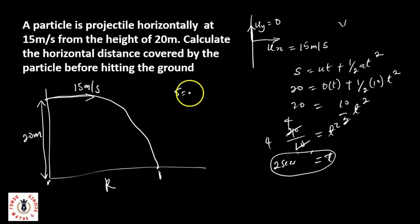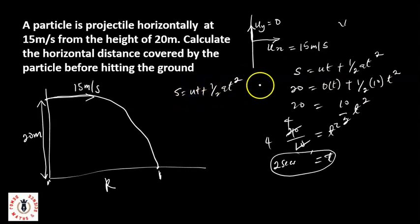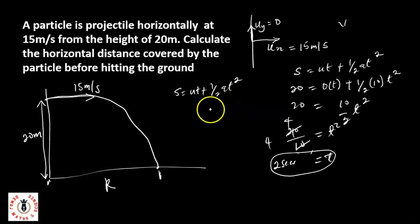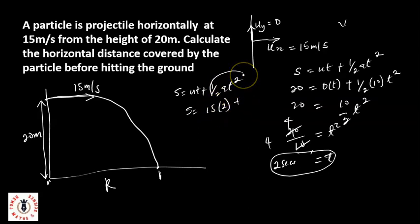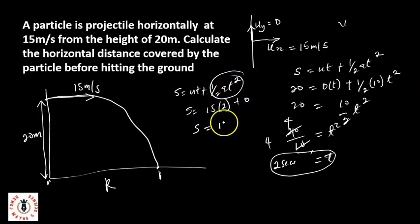Now we can solve for the horizontal distance. Using s equals ut plus half a t squared for the horizontal direction, acceleration a is zero since there's no gravity acting horizontally. So s equals 15 times 2, plus zero, which equals 30 meters. The horizontal distance covered before hitting the ground is 30 meters. Thank you for staying with us.